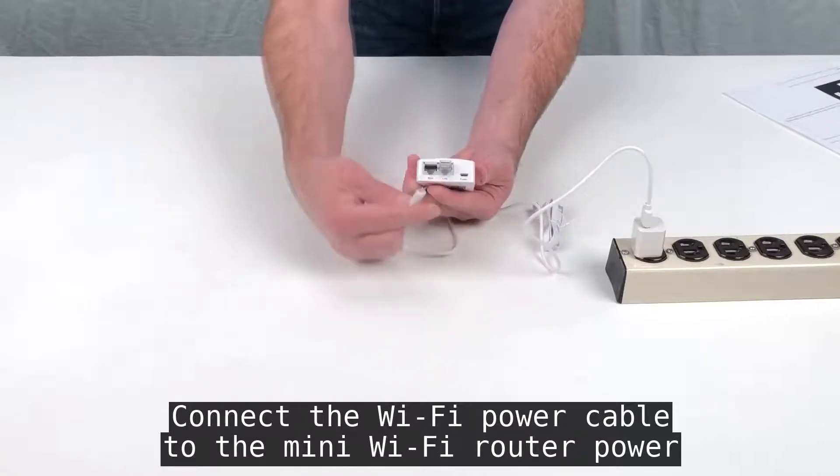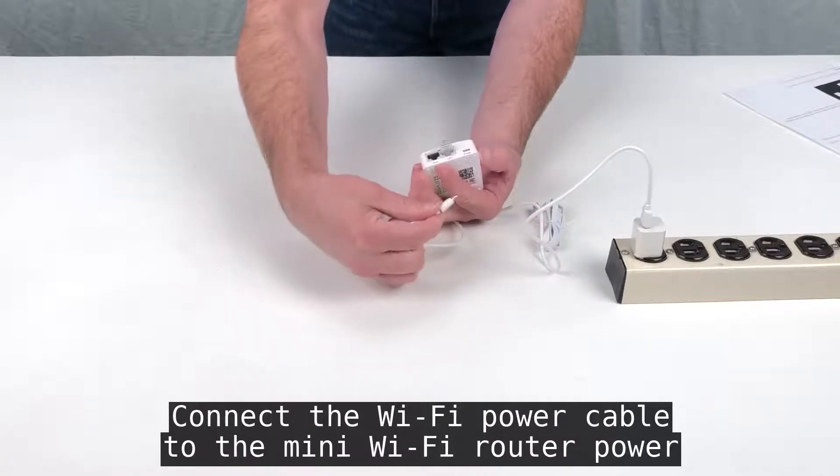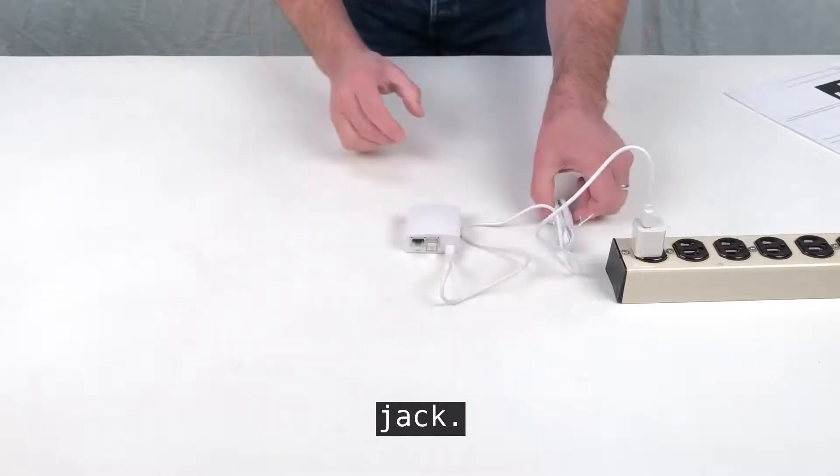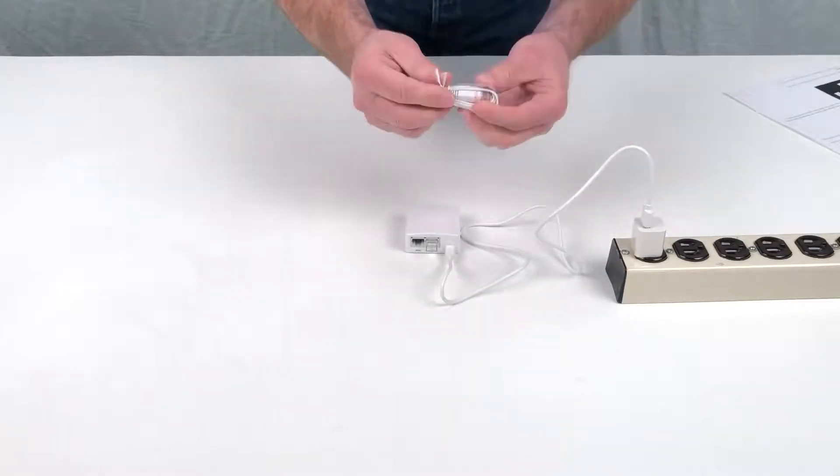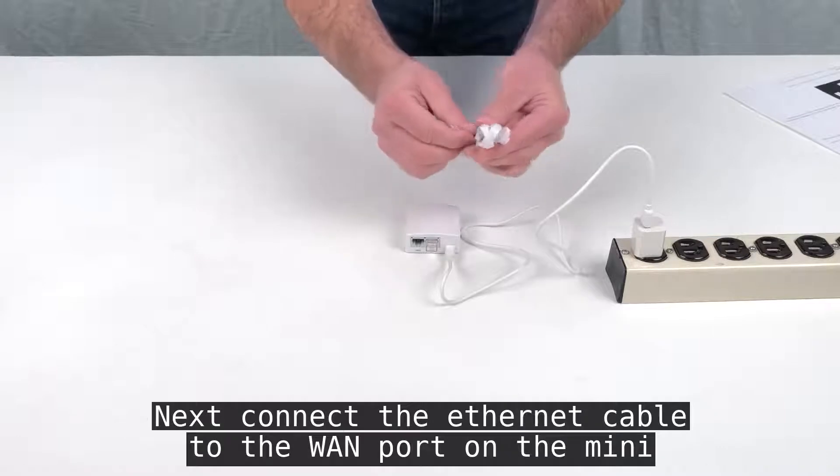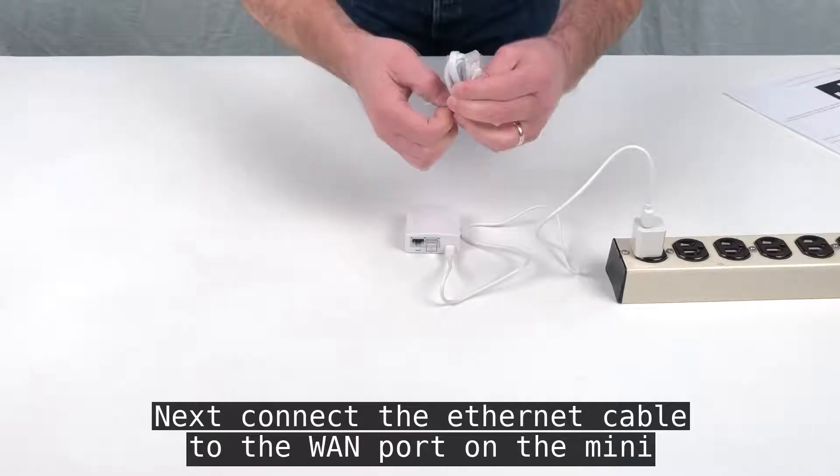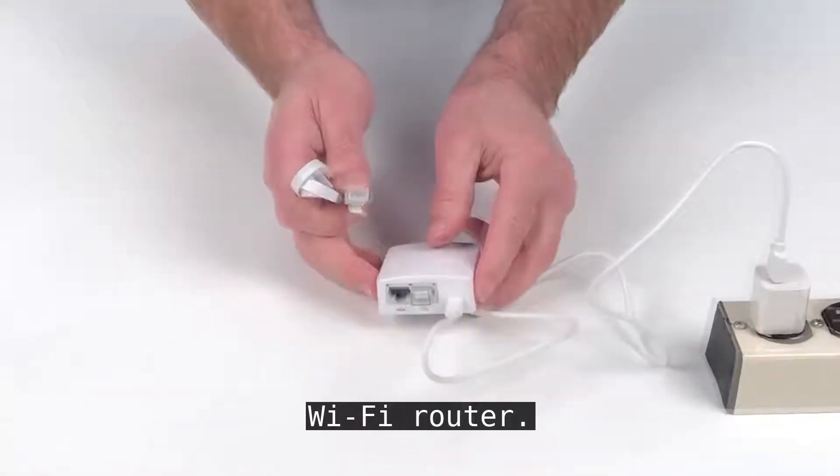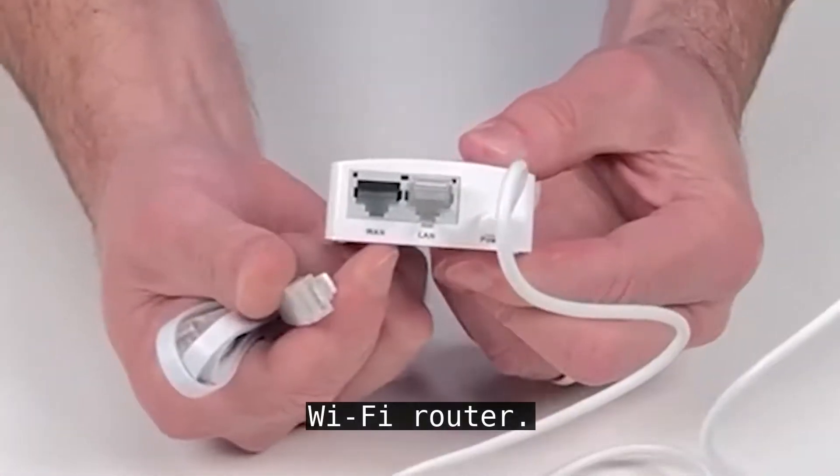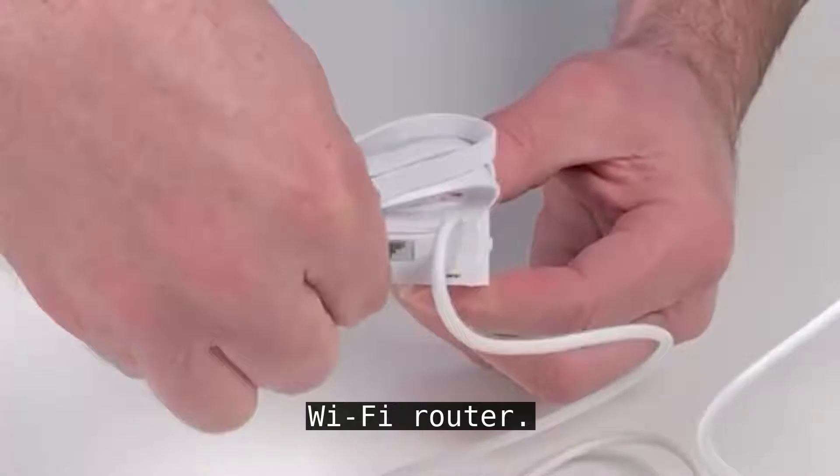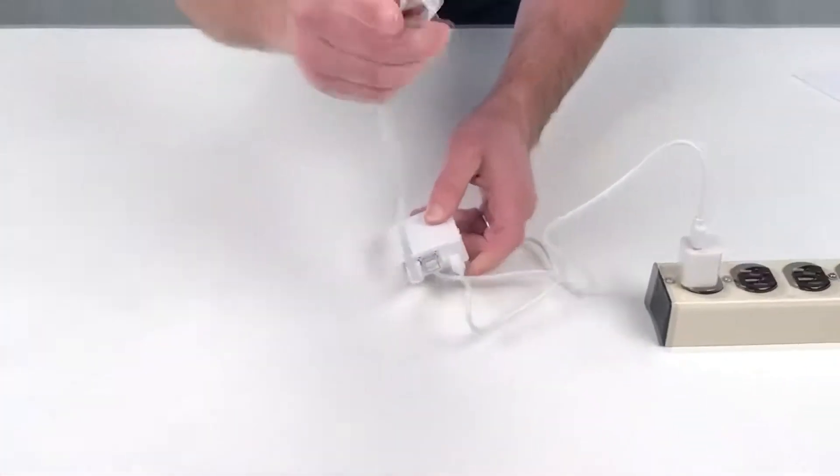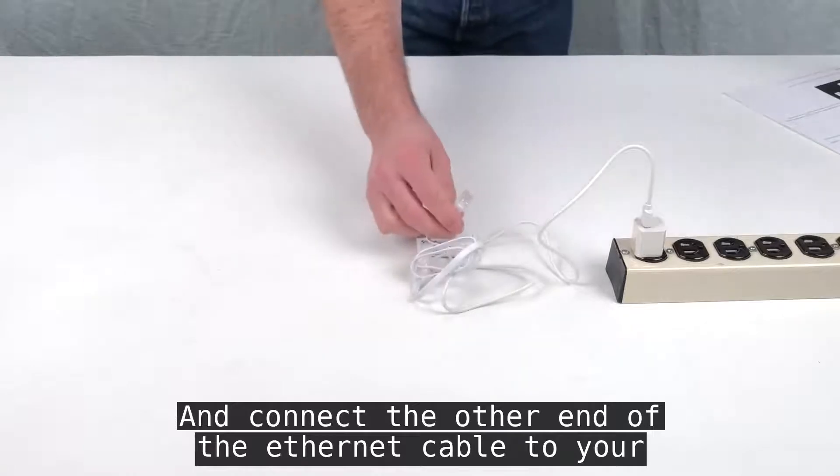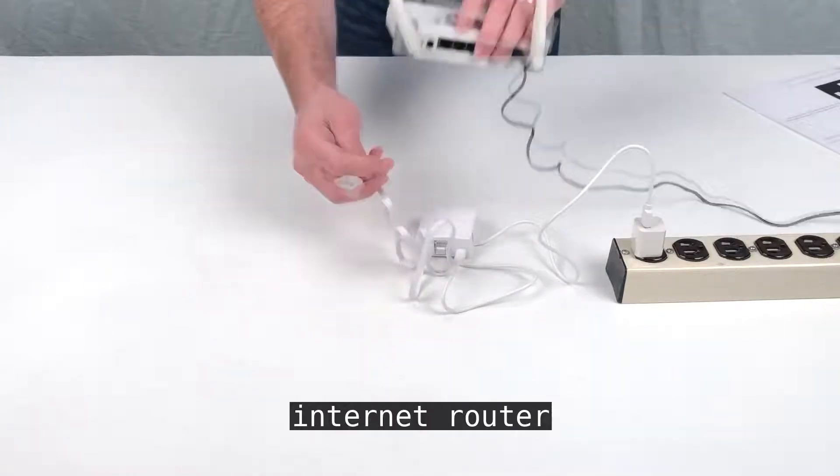Connect the Wi-Fi power cable to the Mini Wi-Fi Router power jack. Next, connect the Ethernet cable to the WAN port on the Mini Wi-Fi Router, and connect the other end to your Internet Router.